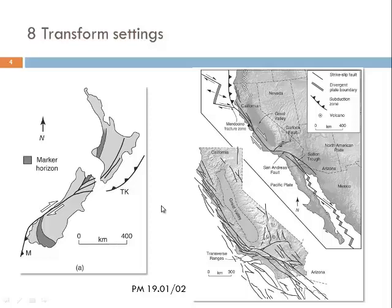The South Island of New Zealand shows the Alpine fault, a dextral transform fault which connects subduction zones — one pointing to the west and one to the east. These are plate boundaries between the Australian plate on the left-hand side and the Pacific plate on the right-hand side. The situation in California is more complicated because here large-scale strike-slip faulting is associated with the subduction of a mid-oceanic ridge seen in Northern California north of the Mendocino fracture zone and in Baja California in Mexico.